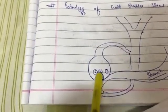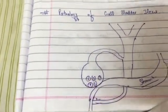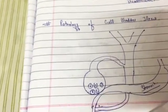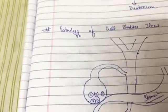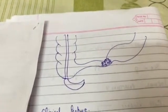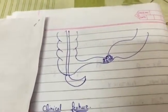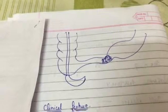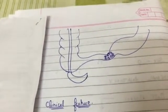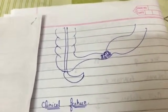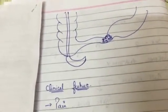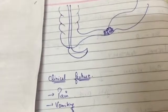The gallstone gravitates downward and causes pressure necrosis, leading to formation of a fistula connecting the duodenum and the gallbladder, giving a path for the gallstone to enter the duodenum. Here you can see I have drawn an ileum, and inside the ileum you can see the gallstone being lodged. Since the ileum is the narrowest part, the gallstone causes obstruction there.